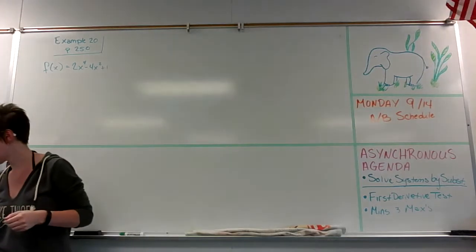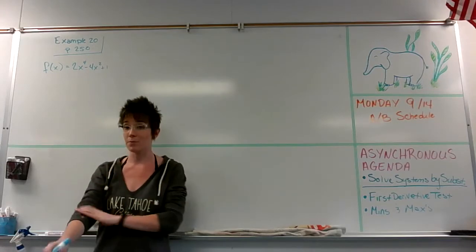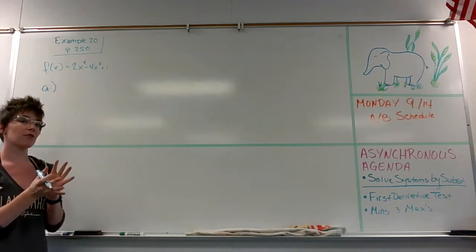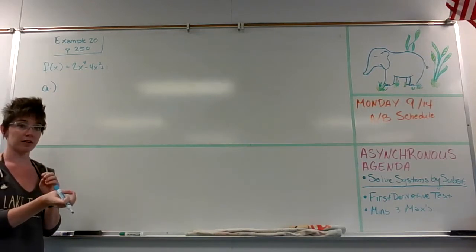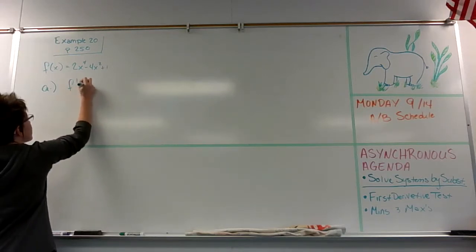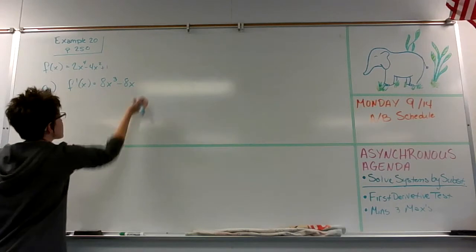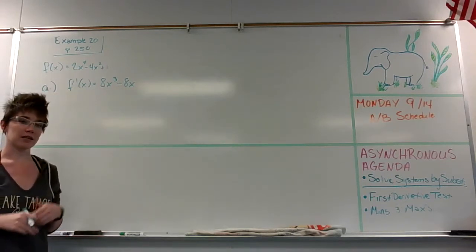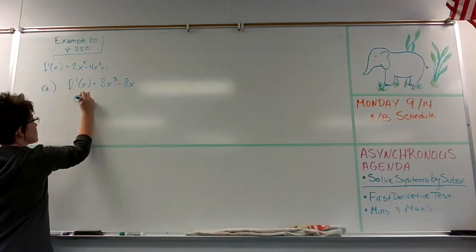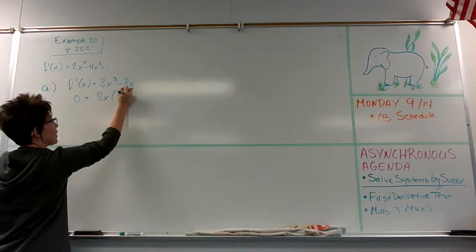Part A says to find all the turning points and determine their nature — is it a max or a min? To find max/mins, that requires taking the first derivative and setting it equal to zero; that's where I get horizontal slopes. So my first derivative of the function is going to look like 8x cubed minus 8x. Now I want to set this equal to zero and find where the derivative is positive or negative. Factoring out 8x, I get x squared minus 1.